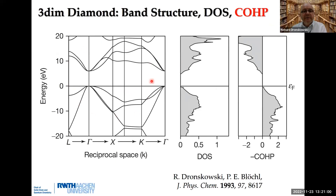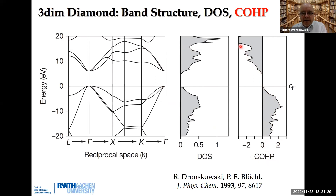Once LOBSTER performs this transformation analytically — not numerically — you are in the position of a molecular quantum chemist and can use all different kinds of tools. For the first time in plane wave codes, you get accurate local DOS, overlap population, Hamilton population, density of energy, charges, and so forth. Let me give you a few examples.